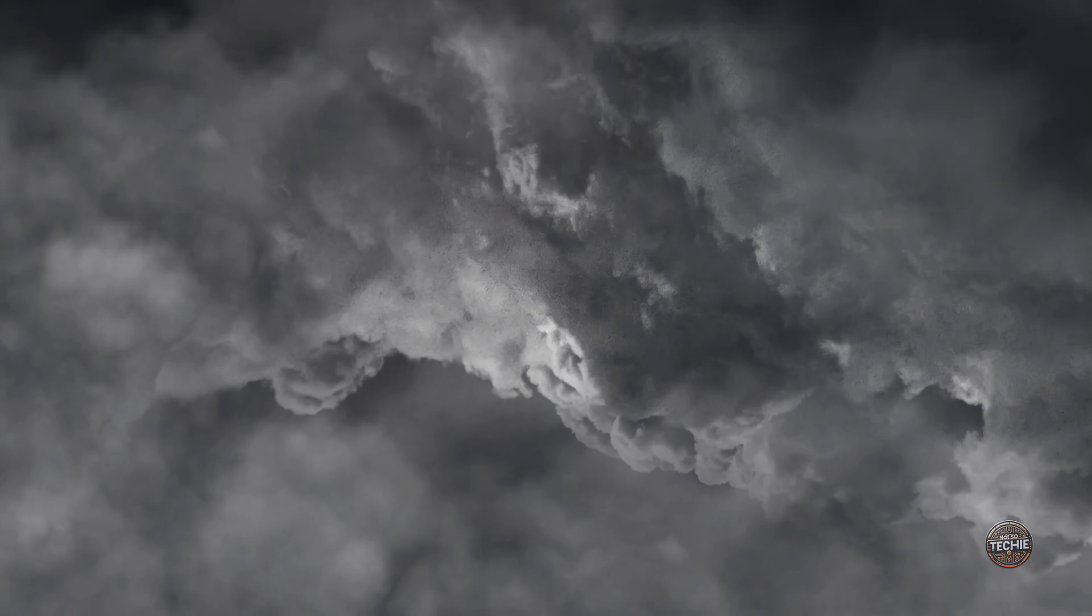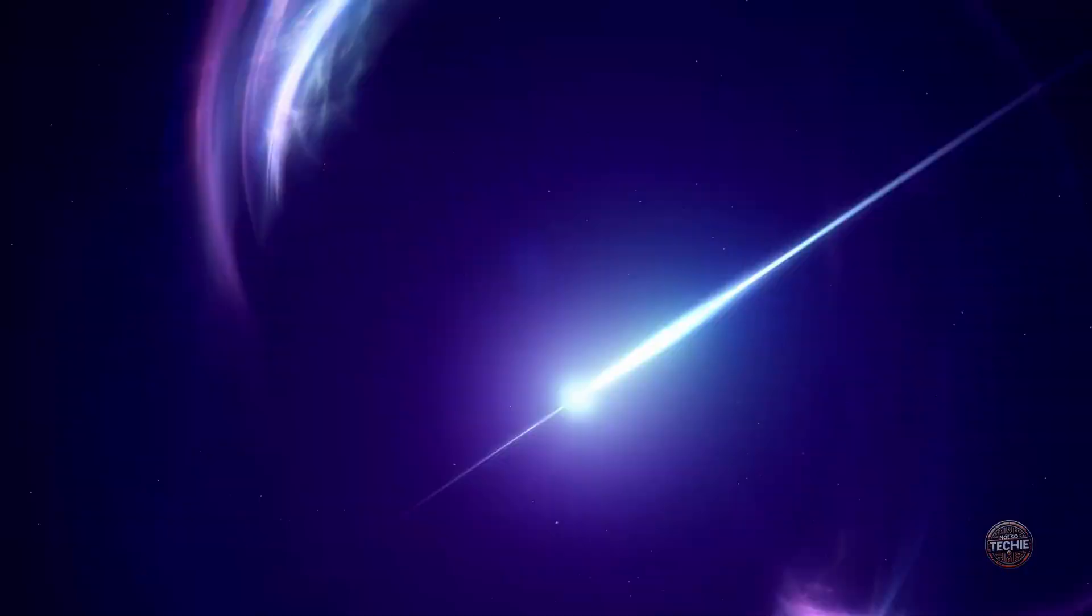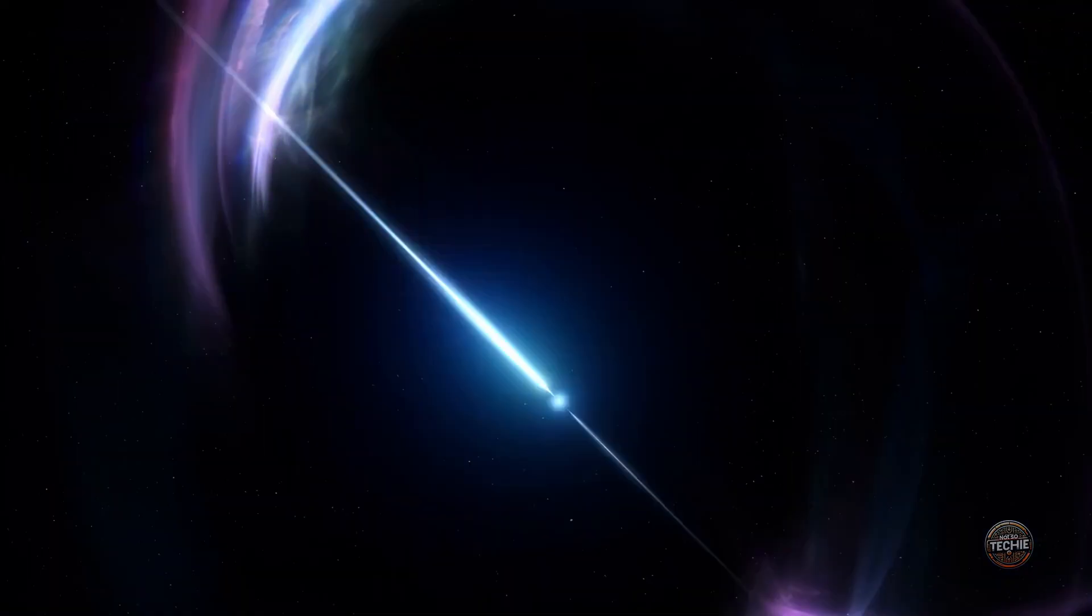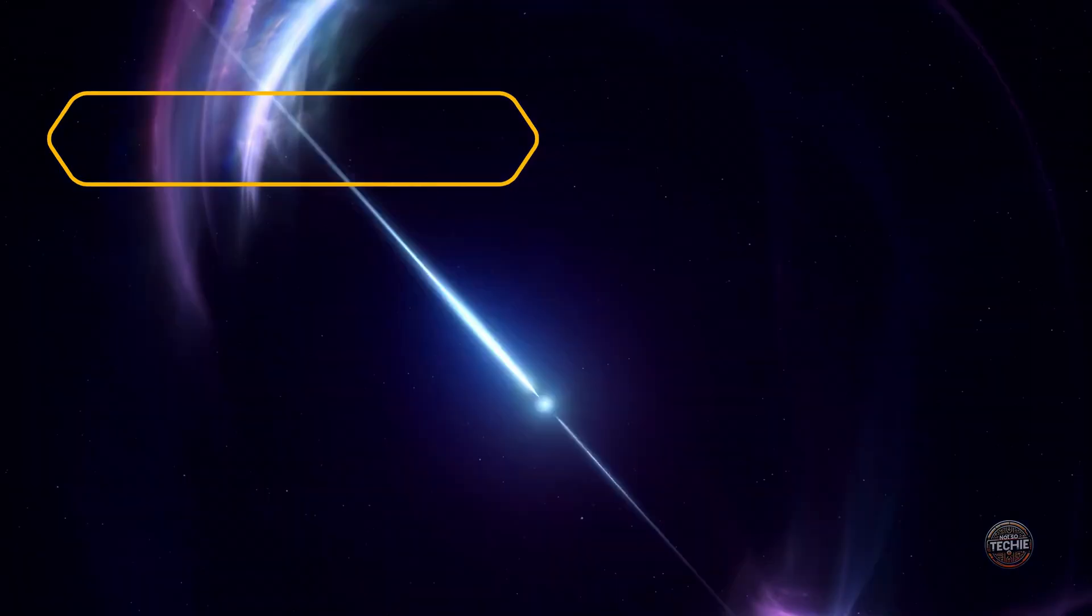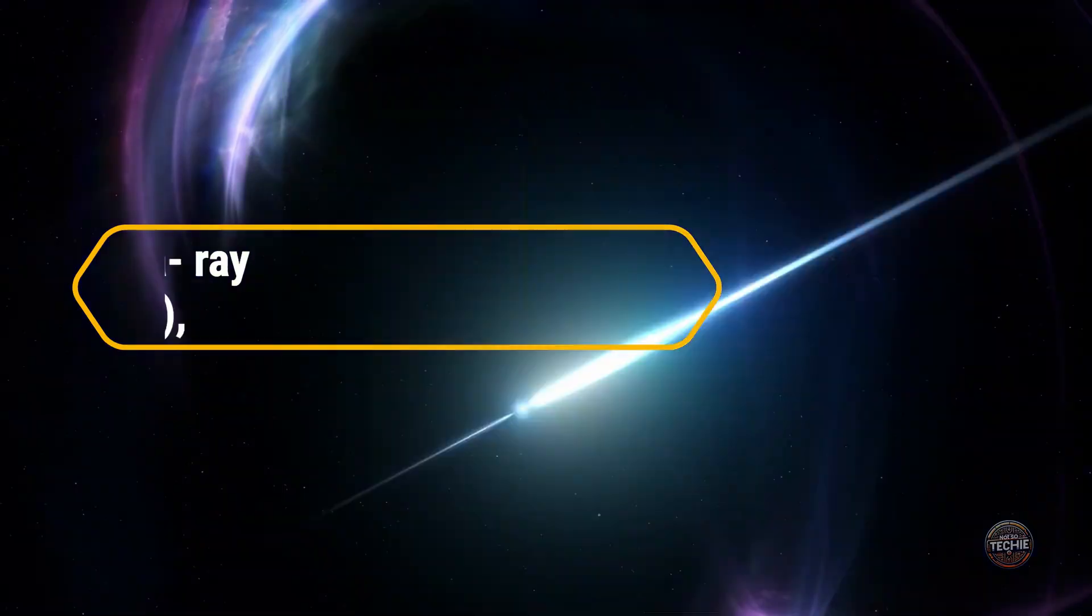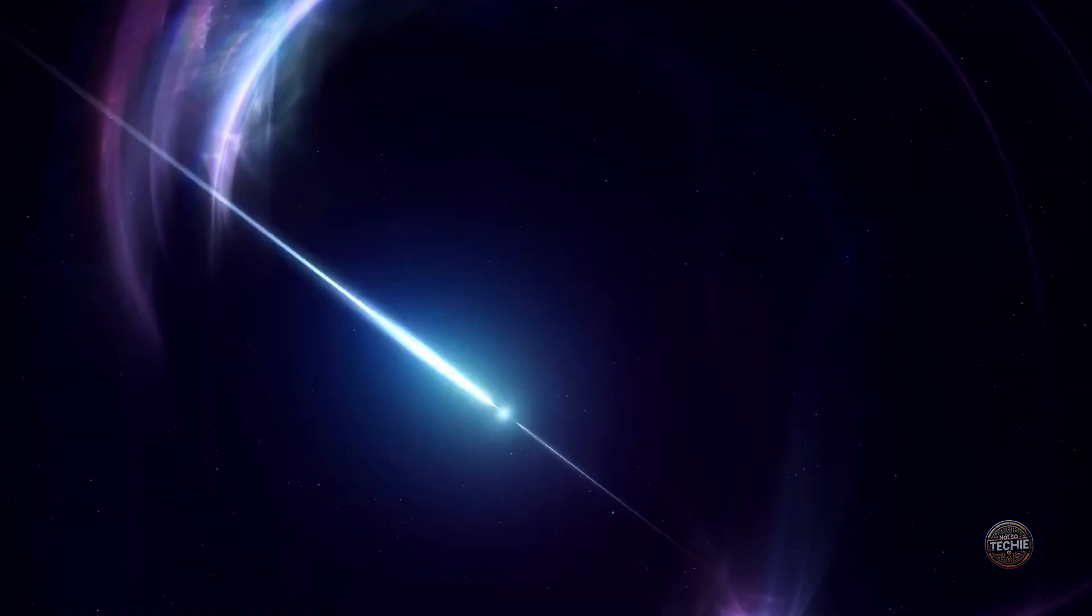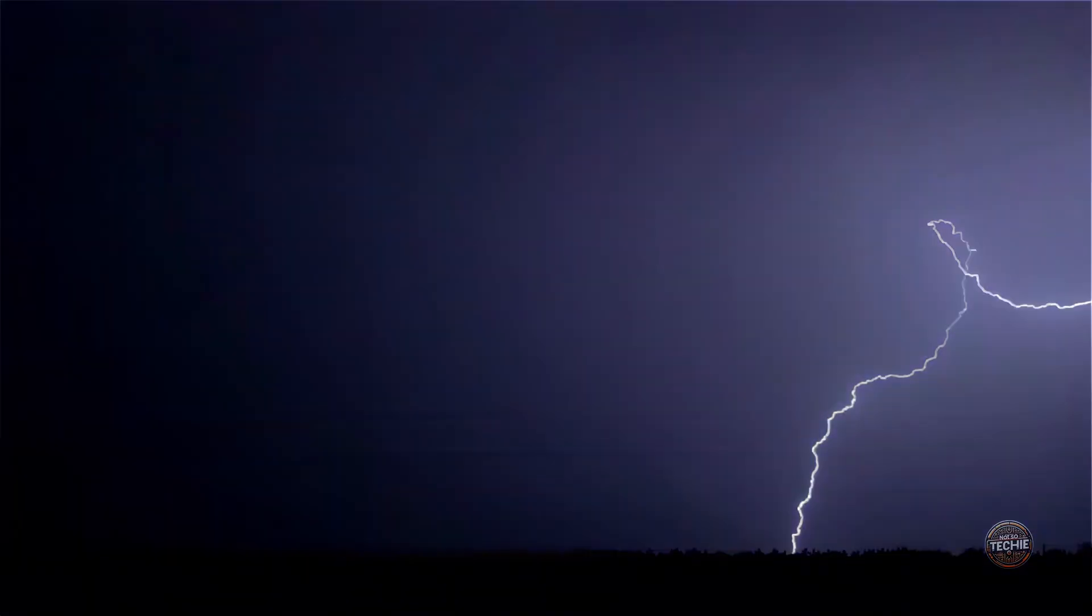Thunderstorms don't just produce one type of gamma-ray emission. Scientists have identified three distinct phenomena: gamma-ray glows, terrestrial gamma-ray flashes (TGFs), and flickering gamma-ray flashes. Gamma-ray glows are steady emissions that can last up to a minute. These glows occur when the electric field inside a thunderstorm reaches a critical level, but doesn't yet discharge as lightning. Essentially, the storm is building up energy, and the glow represents a slow, steady release of some of that energy.